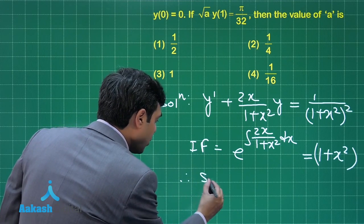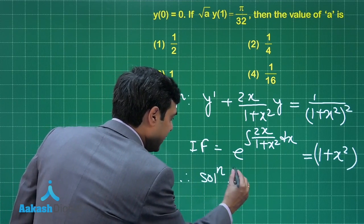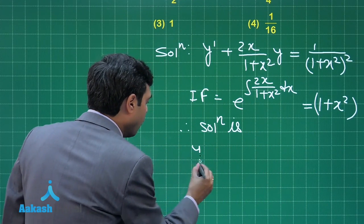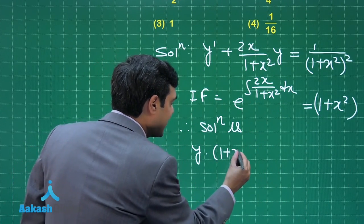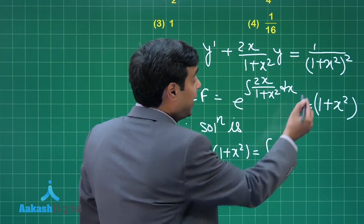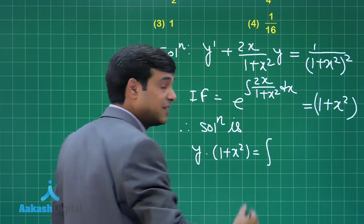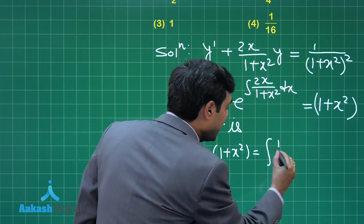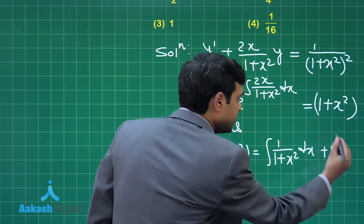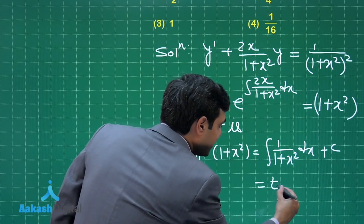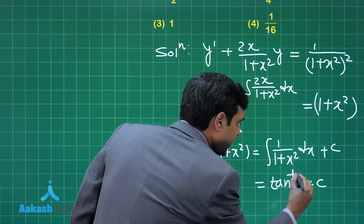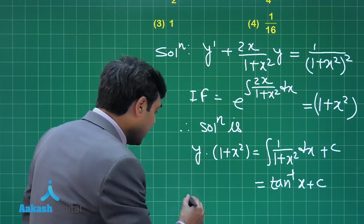Therefore, the solution is: y · (1 + x²) = ∫ 1/(1 + x²) dx + C, which gives tan⁻¹(x) + C.